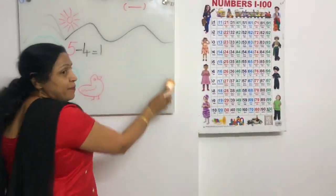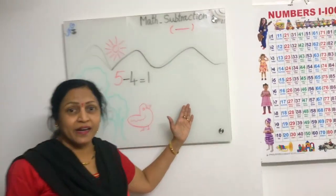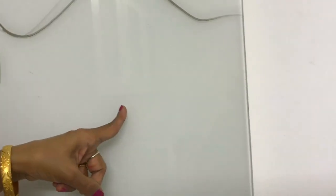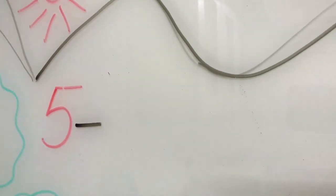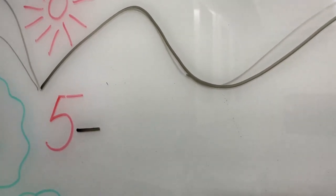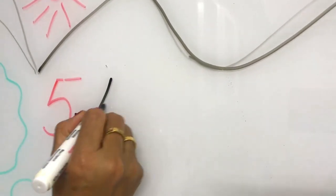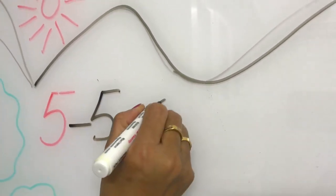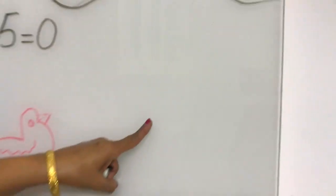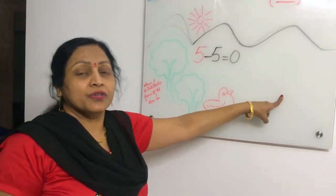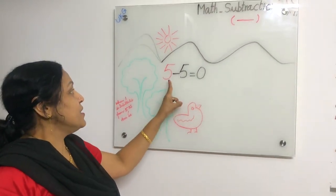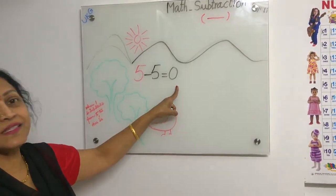None of the ducks came back. So what is remaining? Nothing — zero. No one came back. See here children: five is subtracted from five, and the answer is zero. Nothing is here. No little ducks came back. Five went off, all five. Five is subtracted from five — answer is zero.